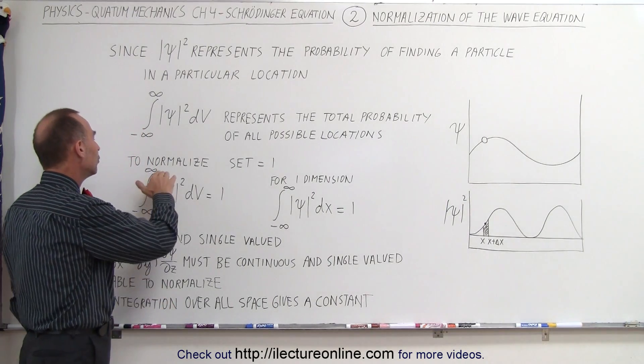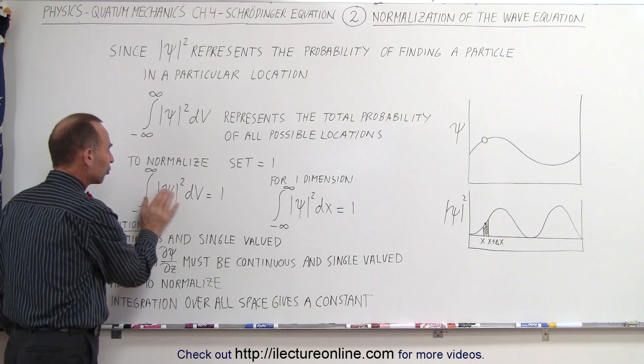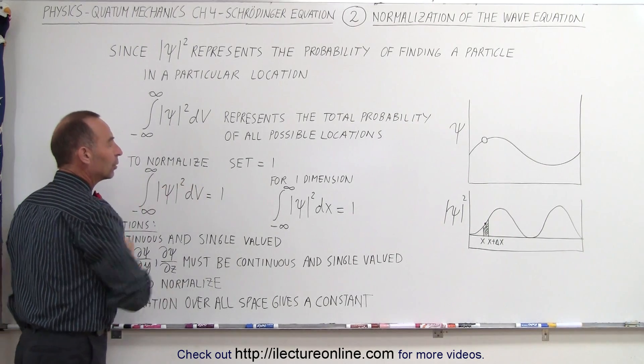To do that, we simply take the integral of the probability density function over all of space and set it equal to one.